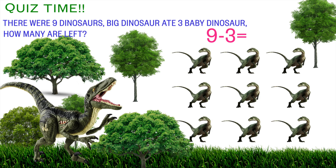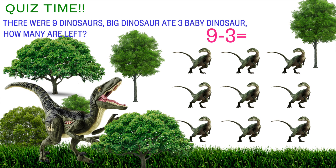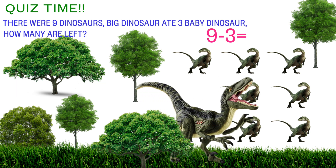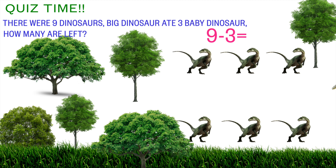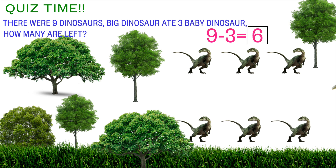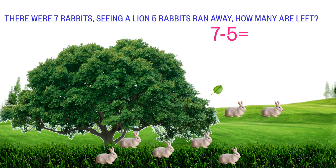It's quiz time! There were nine dinosaurs. A big dinosaur ate three baby dinosaurs. How many are left? One, two, three, four, five, six. So the answer is six.